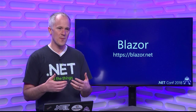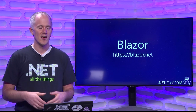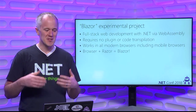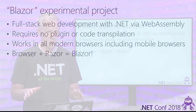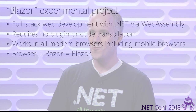We've been working on an experimental project to bring .NET to the browser so you can do full-stack web development, and we call this project Blazor. What is Blazor? Blazor is full-stack web development for .NET via WebAssembly. It requires no plugins and there's no code transpilation. All you need is a browser — you don't need to install anything into it. We're not taking your .NET code and translating it into JavaScript. And where does the name come from? Browser plus Razor equals Blazor.